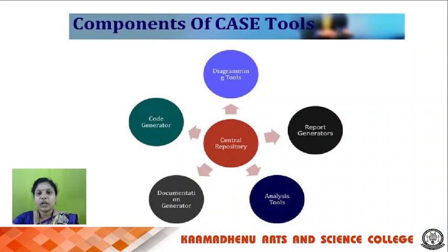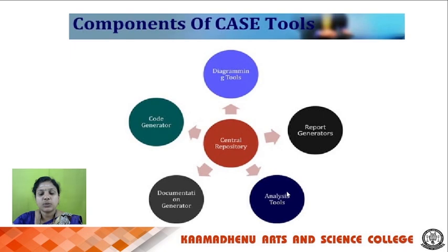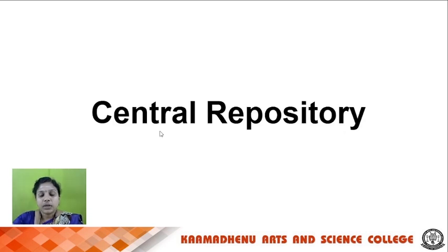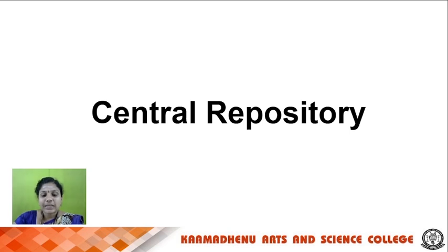Moving on to components of CASE tool. The components of a CASE tool are organized around a central repository and divided into five types: diagramming tools, report generators, analysis tools, documentation generators, and code generators. The central repository is a centralized database used to store graphical diagrams, prototype forms, and reports of analysis and diagramming workflow. It acts as an information repository and data dictionary.